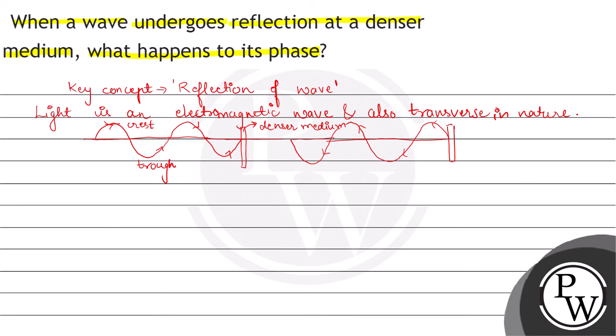Also, you can see that firstly, what happened? This part was trough, which was at the denser medium. And after some time, when it gets reflected from the denser medium, it has changed its nature. That is, the trough which was there, after reflecting, it became crest and reflected. And where our crest was, it became a trough. So, this is the major change here.